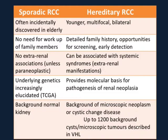Sporadic RCC is often incidental, discovered in the elderly — that classic small renal mass incidentaloma. Hereditary RCCs tend to present in younger patients with a predisposition to be multifocal and bilateral. For a 65-year-old with an incidental 3 cm mass, there's no need for family member workup, whereas younger patients warrant a detailed family history and consideration of extra-renal symptoms pointing to a hereditary syndrome. Hereditary RCC is associated with specific extra-renal manifestations dependent on the underlying genetic disease. The TCGA has shed a lot of light on sporadic RCC mutations, and there are many similarities with the underlying genetics of hereditary RCC.